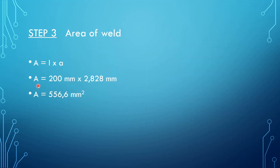Step number three: we want to determine the area of the weld. The formula is: Area = l × a, where 'l' is the effective length determined in step one, and 'a' is the throat determined in step two. So l = 200 mm and a = 2.828 mm. Multiplying these together gives us 565.6 square millimeters. This is the area of our weld.